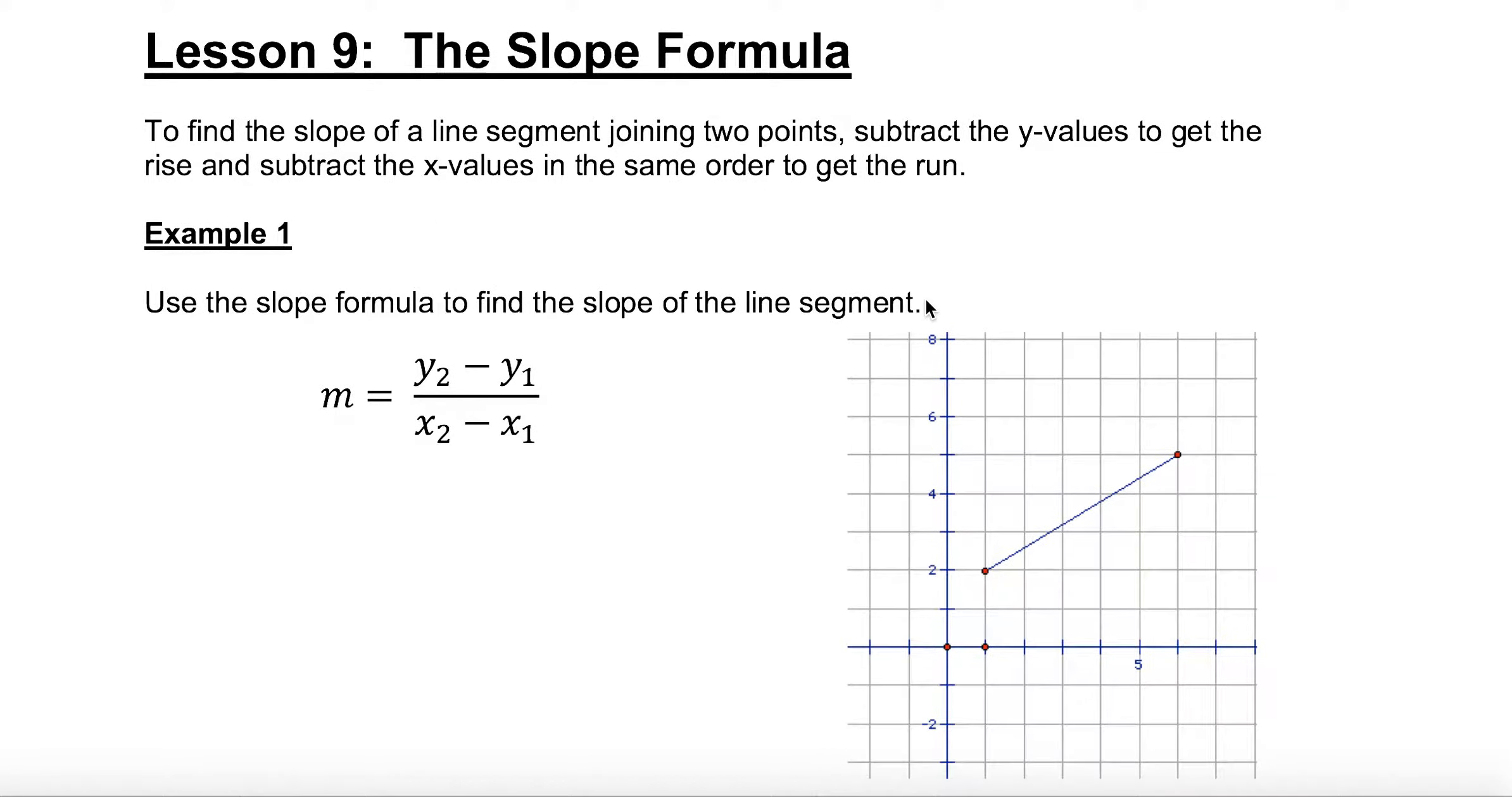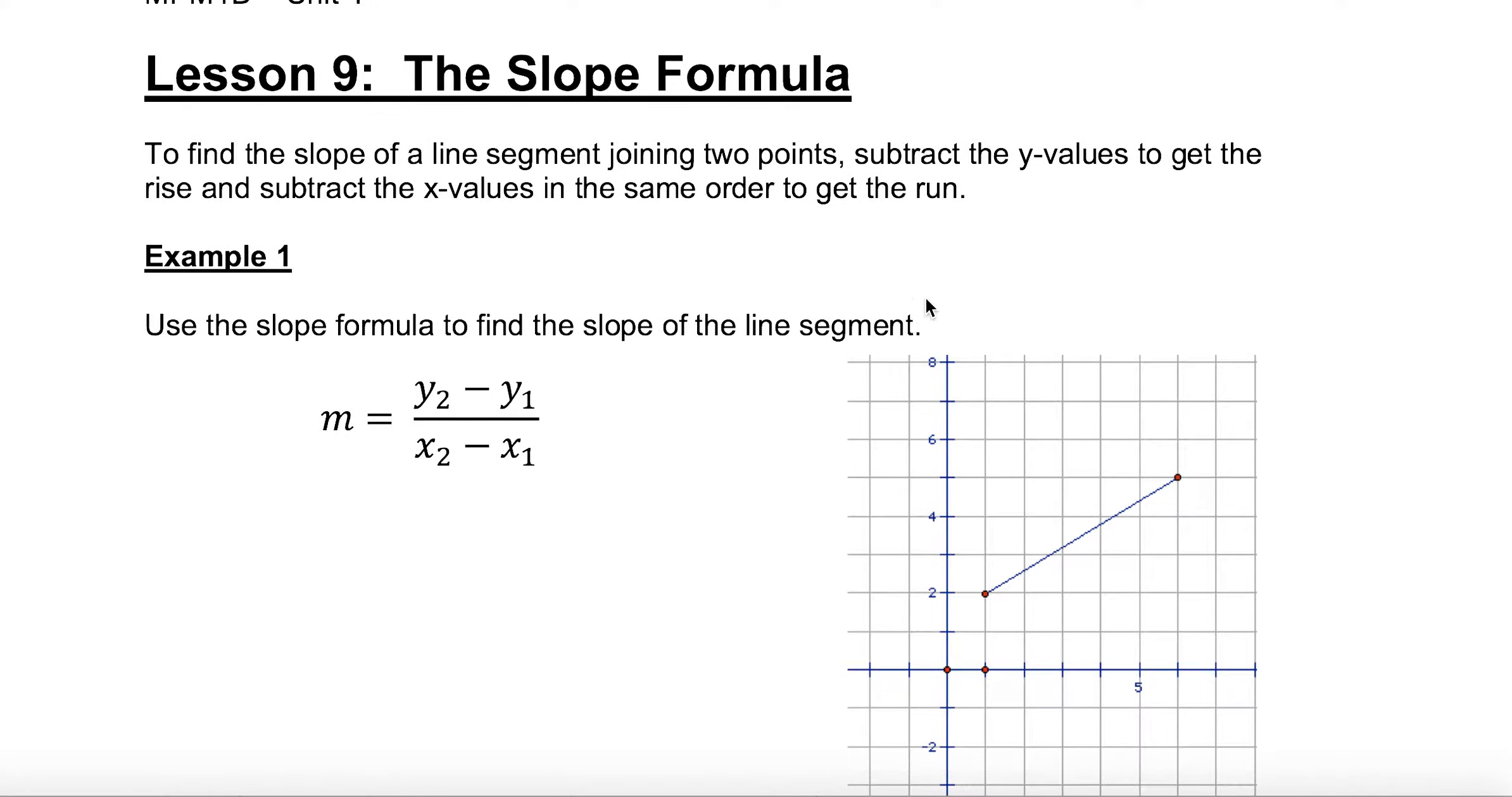What we've done up until now to find slope is that we've been counting squares. We see two points, we have a graph, so we would look at the rise over the run here. We would count the rise and get three squares, and we would look at the run and get one, two, three, four, five squares. We would know that this rise over run is three fifths, and it's positive because the line is going up.